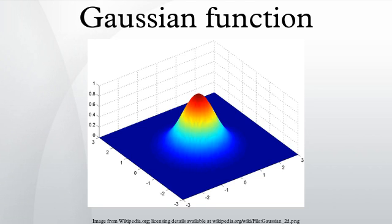Properties: Gaussian functions arise by applying the exponential function to a general quadratic function. The Gaussian functions are thus those functions whose logarithm is a quadratic function.